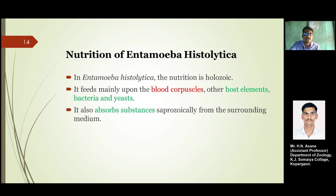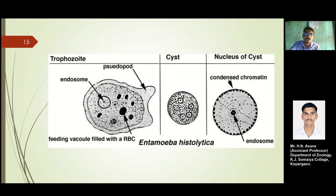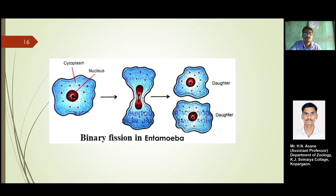It also absorbs some substances osmotically from its surrounding medium, which is the entire gut of the host. We studied its various stages including the nucleus of the cyst. At the trophozoite stage it has pseudopodia for locomotion, but in the quadranucleate cyst stage it loses its pseudopodial property.